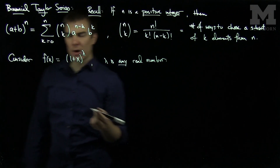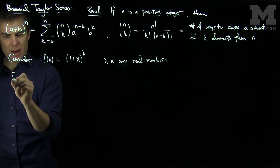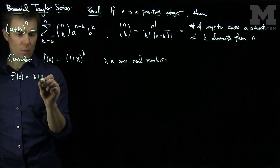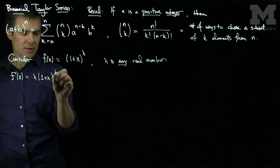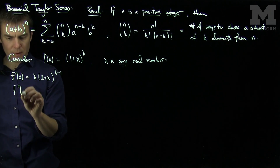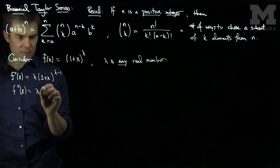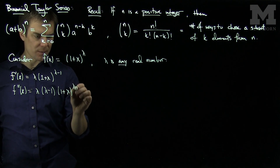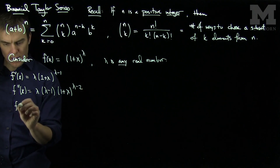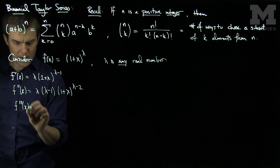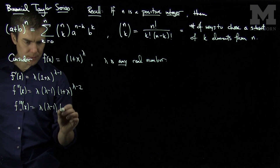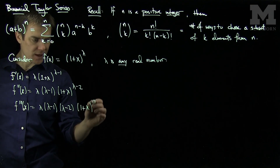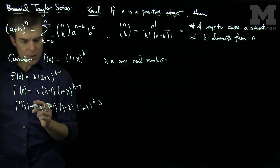We can compute the derivatives of this function. So f′(x) = λ(1 + x)^(λ−1), f″(x) = λ(λ − 1)(1 + x)^(λ−2), and f‴(x) = λ(λ − 1)(λ − 2)(1 + x)^(λ−3), and so on.